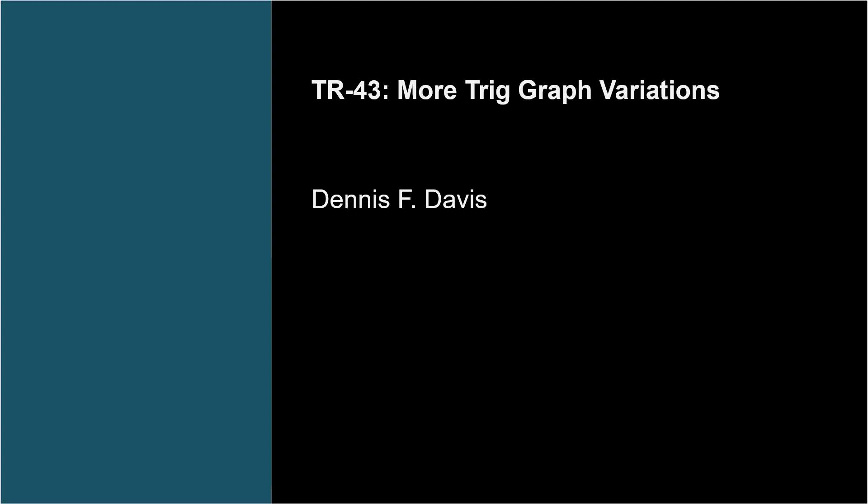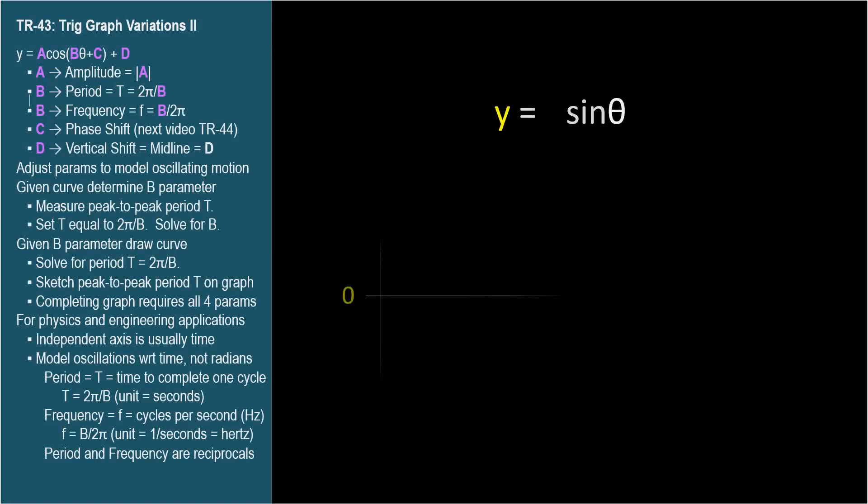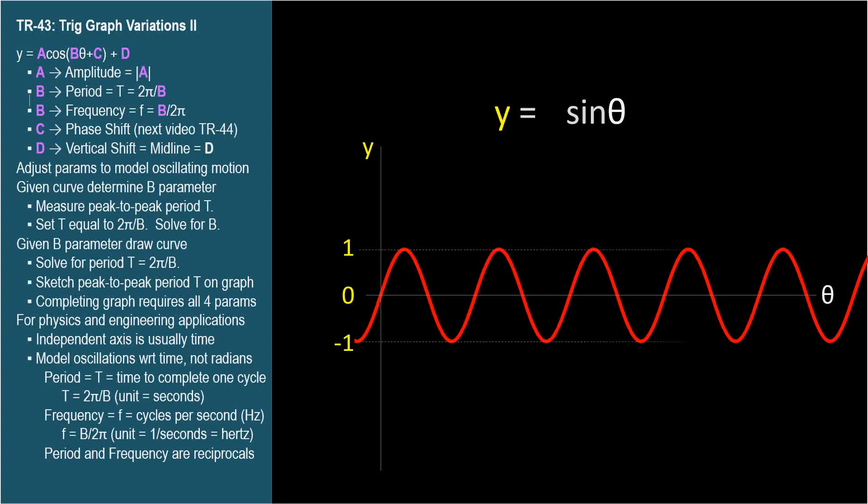We'll continue graphing trig function variations. For now, the horizontal axis is the theta axis. The unadorned equation y equals sine theta oscillates up and down around the theta axis, as high as y equals 1 and as low as y equals negative 1.